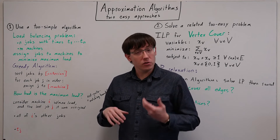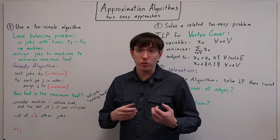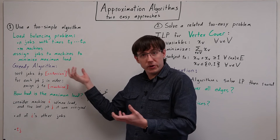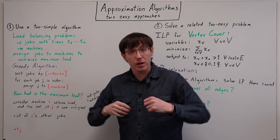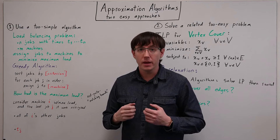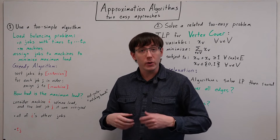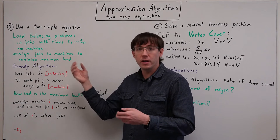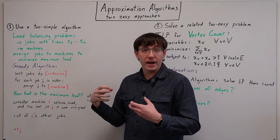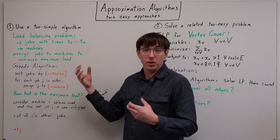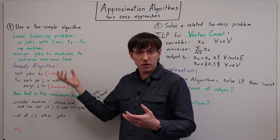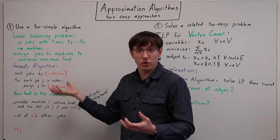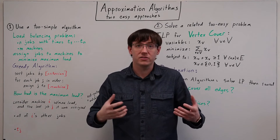And that decision problem is one you could prove is NP-complete. It's closely related to lots of other packing problems we've already seen, and so you could do a reduction from one of those packing problems to this one to show that the decision version is NP-hard. And if the decision problem is hard, then the optimization version is at least as hard.